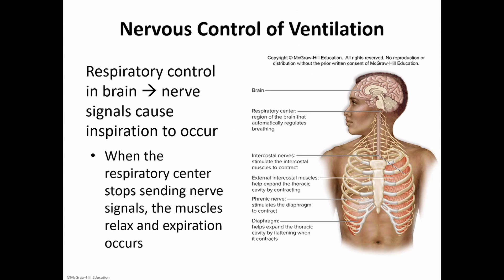So how do we control ventilation? There are a few ways we can control it and a few different body systems involved. One is the nervous system, which most definitely has some control over ventilation. When we look at the brain, we look at nerve signals that are going to tell us to breathe in — they're going to cause inspiration to happen. We send out a signal to tell the intercostal muscles to contract and to tell the diaphragm to contract. When we tell these muscles to contract, that's when we see that expansion in the thoracic cavity, and that expansion allows us to breathe in. When the signal stops, these muscles are going to relax, they shrink back in, we have less space available in the lungs, pressure goes up, and so we breathe out.